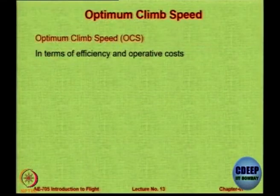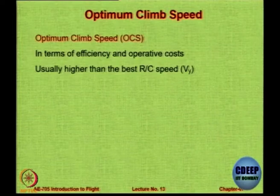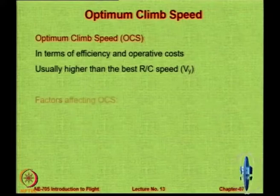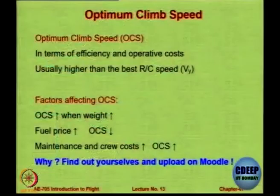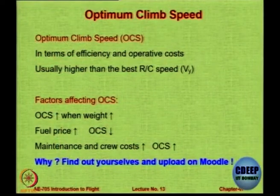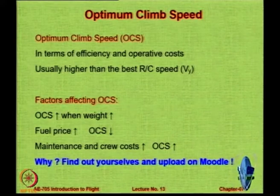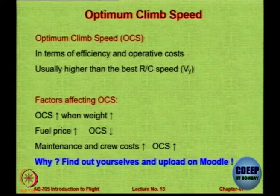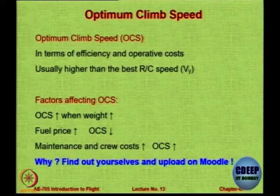Coming back to optimum climbing speeds: for commercial aircraft we look at efficiency and operating costs. These optimum climb speeds are usually higher than the best rate of climb speed Vy. Factors affecting optimum climb speed: when weight increases, this speed increases — heavier aircraft climb at a higher optimum speed. If fuel price goes up, the speed tends to go down. Maintenance and crew costs are higher if OCS is higher. Commercial aircraft do not operate at either Vx or Vy — they operate at OCS, the optimum climb speed, which is slightly higher than Vy.